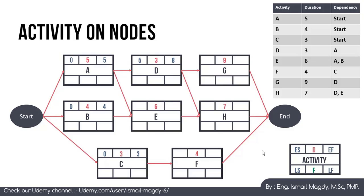Activity E depends on both A and B. A has Early Finish of 5 and B has Early Finish of 4. When an activity depends on multiple predecessors, we take the latest Early Finish as the Early Start — so Early Start of E = 5. With duration of 6, the Early Finish of E = 11. This makes sense because E cannot start until both A and B are complete.